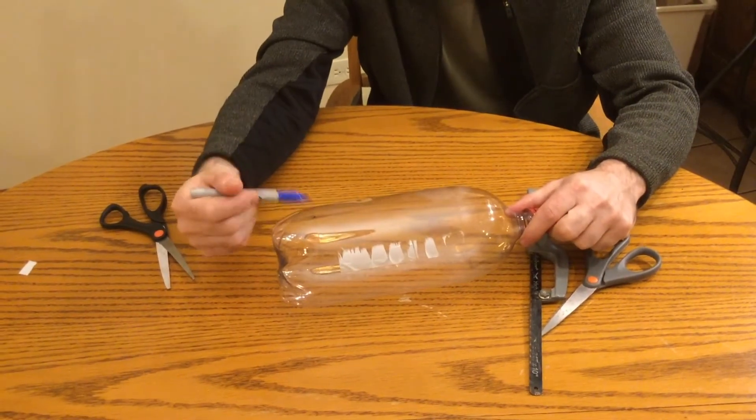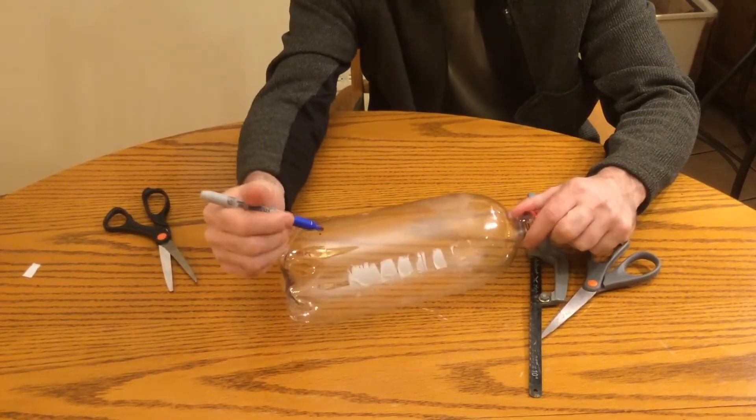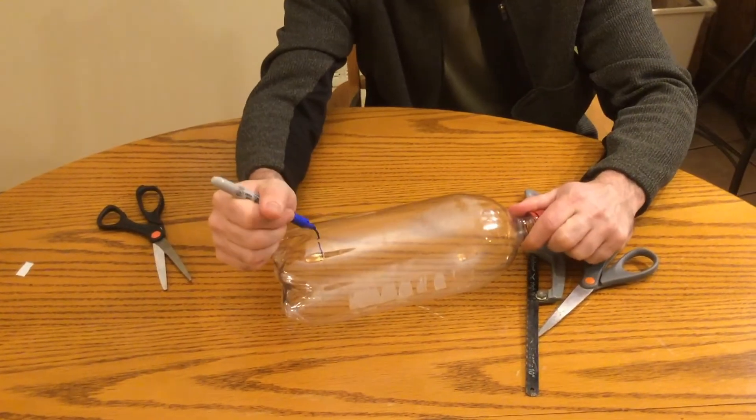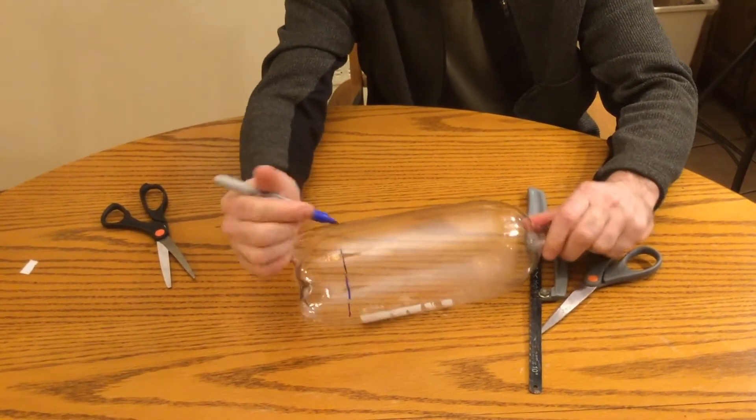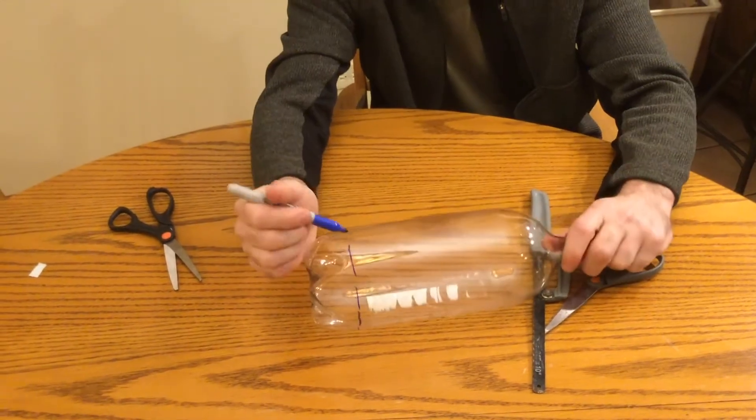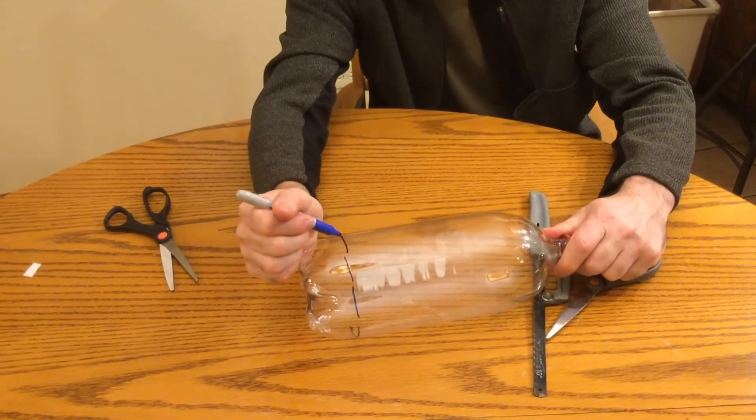Start by marking the seam around the bottom that's on every two-liter bottle so that you have a line to guide your cutting, because you're going to want this to sit flat when you're done. This is a nice guideline to follow with the saw and the scissors.